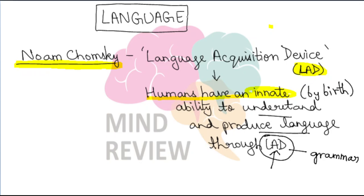Language itself — I hope I don't need to explain that, because this is as simple as what I'm doing right now. Language can be verbal, and language can also be non-verbal — even through actions you can communicate something. So language could be of any type: Hindi, English, German, French, any language for that matter.